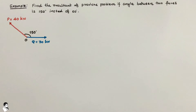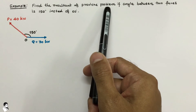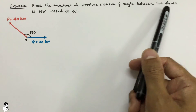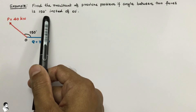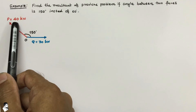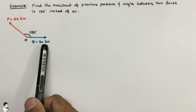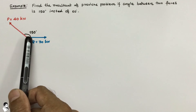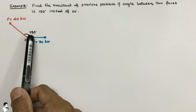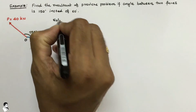Let us see another example. Here we require to find the resultant of the previous problem. The problem is the same but the angle between the two forces is now 150 degrees instead of 60 degrees. Force P is equal to 40 kN and force Q is equal to 30 kN, same as the previous problem, but the angle is now 150 degrees.